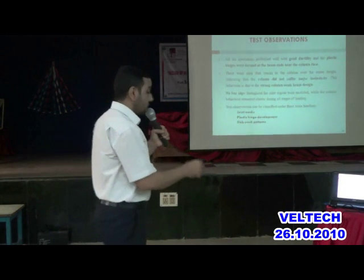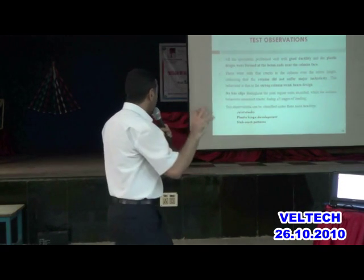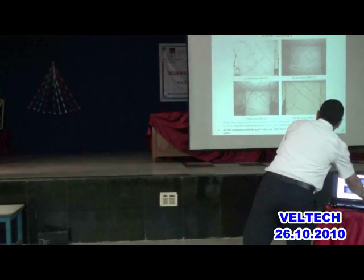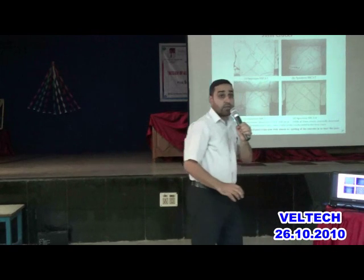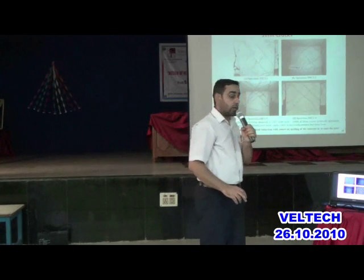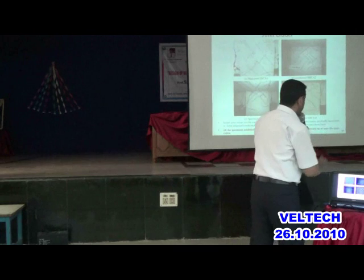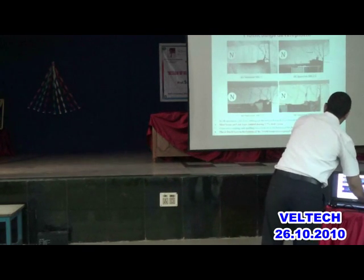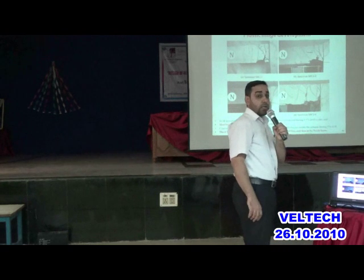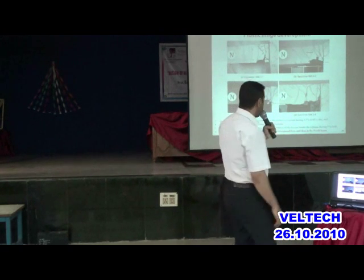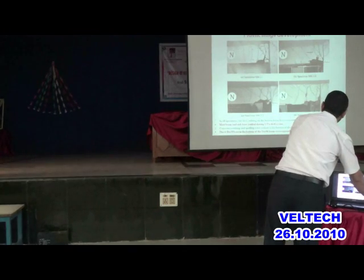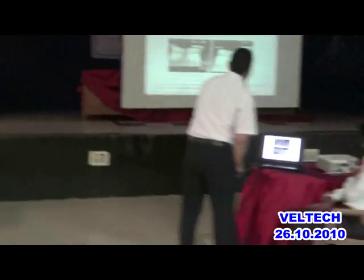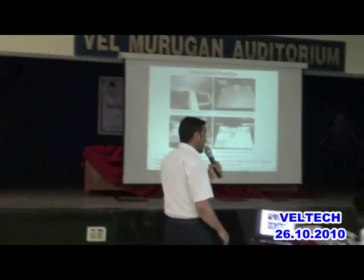Some test observations, classified into joining cracks, plastic hinge development, and slab. We observed diagonal cracks at the beam-column connections, and also two methods to measure shear deformations. We got plastic hinge development at the beam-column interface. The concrete is spalled and the bars are exposed and buckled. Here is a close-up view of the cracks inside the slabs.